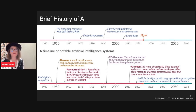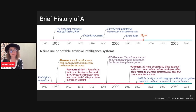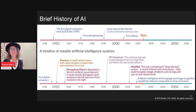In the 1950s, Theseus was a small robotic mouse that could navigate a simple maze and remember its course. In the 1960s, Perceptron Mark I was regarded as the first artificial neural network — it could visually distinguish cards marked on the left side from those marked on the right. In the 1990s, TD-Gammon learned to play backgammon at a level just below the top human players — and I believe Yahoo Messenger's backgammon game was powered by TD-Gammon, though I'd need to double-check.